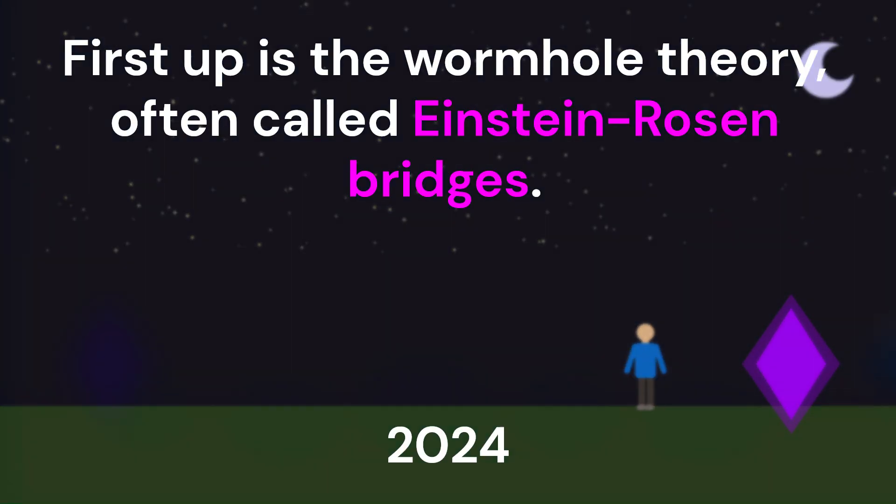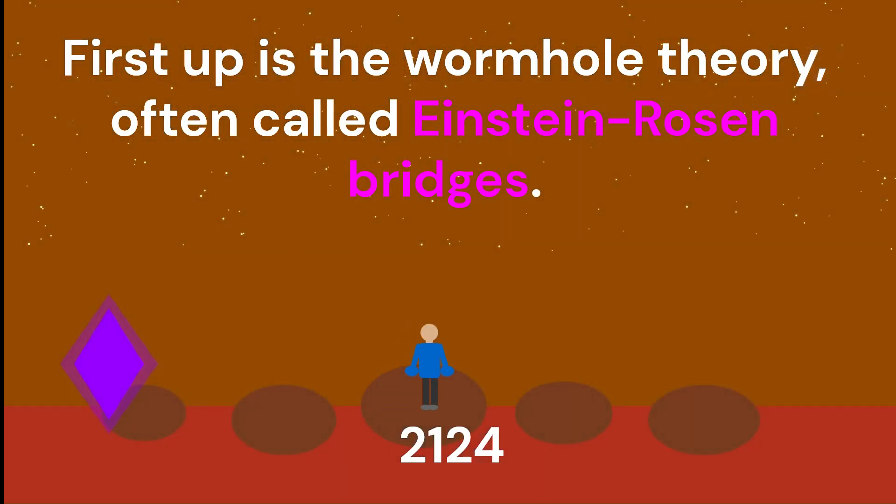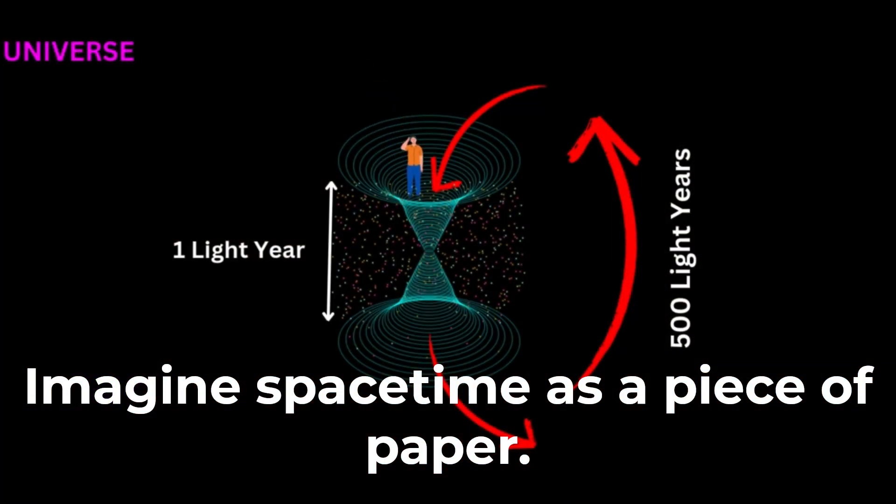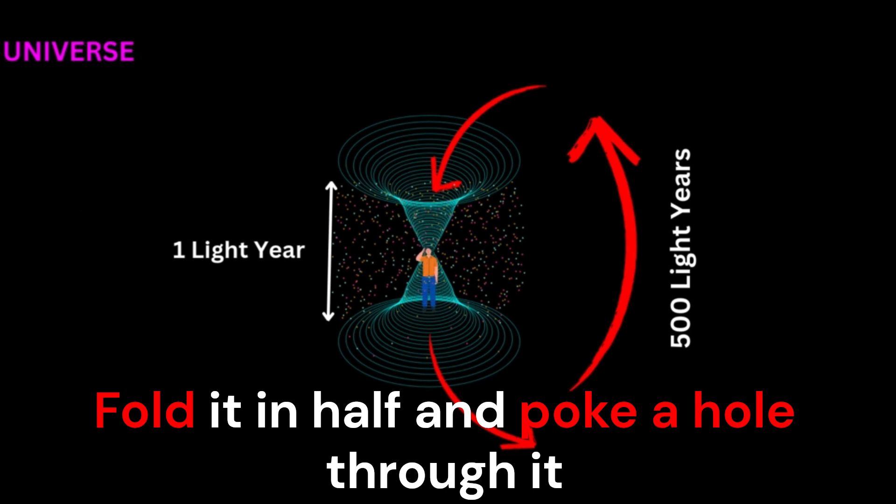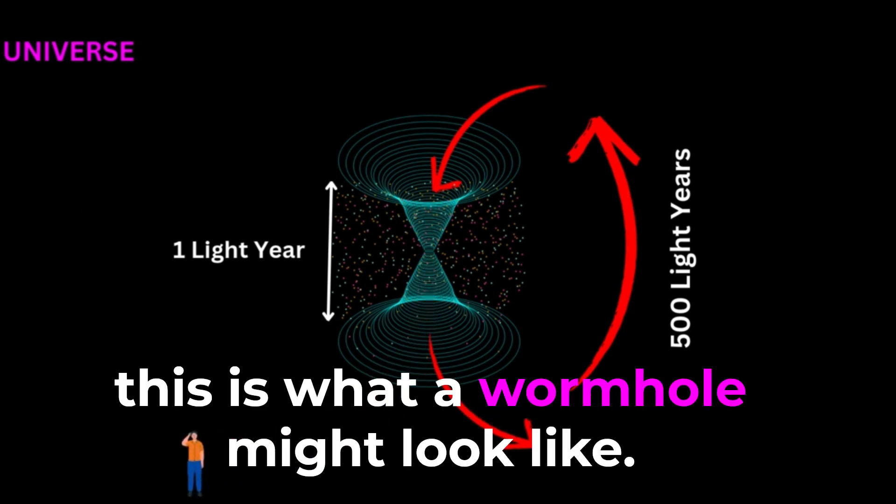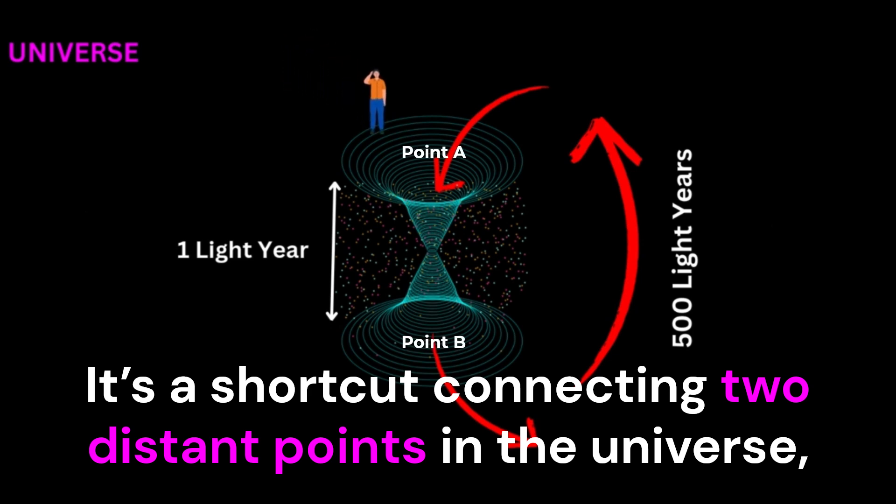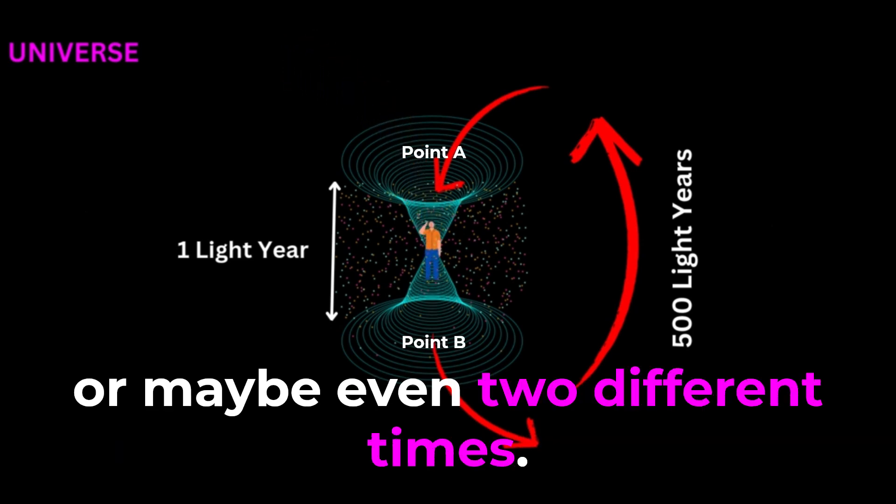First up is the wormhole theory, often called Einstein-Rosen bridges. Imagine space-time as a piece of paper. Fold it in half and poke a hole through it. This is what a wormhole might look like. It's a shortcut connecting two distant points in the universe, or maybe even two different times.